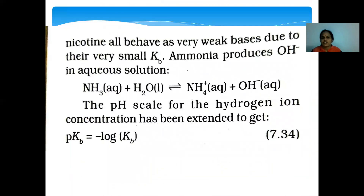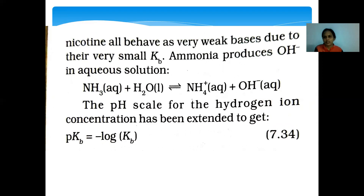For the equation NH₃ + H₂O ⇌ NH₄⁺ + OH⁻, pKb = -log Kb. Smaller the value of pKb, or larger the value of Kb, more basic will be the compound. Greater will be the basic strength of the compound provided.